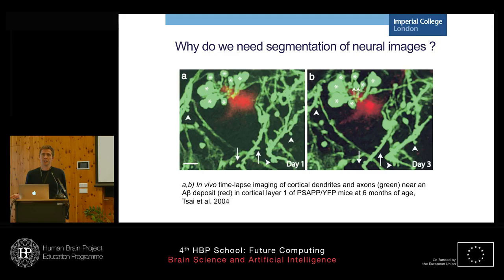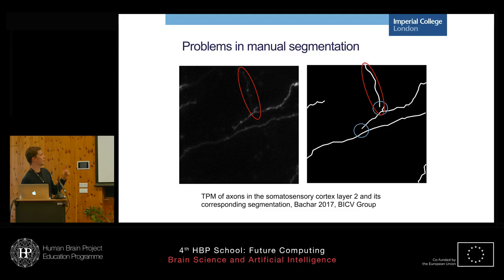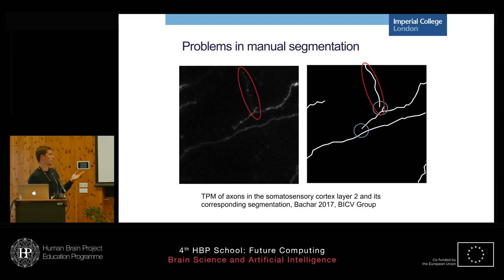The long-term application would be faster and more accurate diagnosis by automation of medical image processing. The image on the right is the segmentation of the image on the left. As we can see, this is quite a good approximation, but it has some defaults. For example, the red circle shows that sometimes the segmentation can be arbitrary, and with the fluctuation of intensity along the axons, we can see that it introduces gaps.